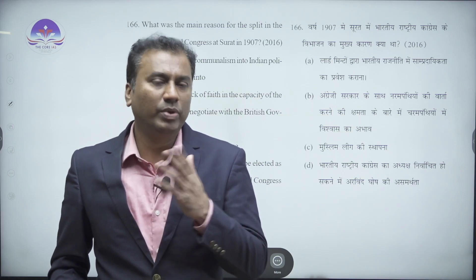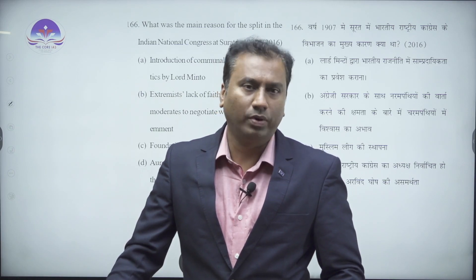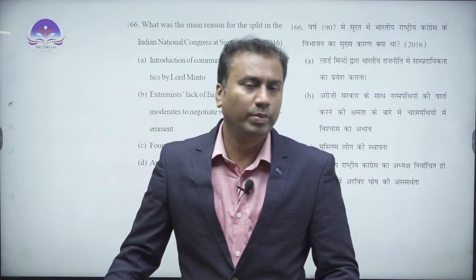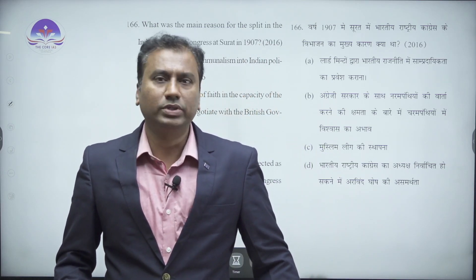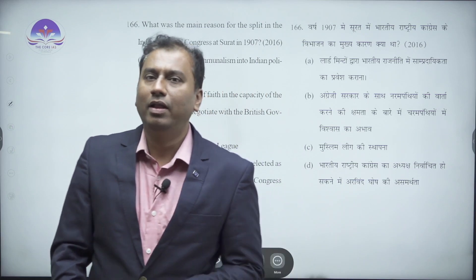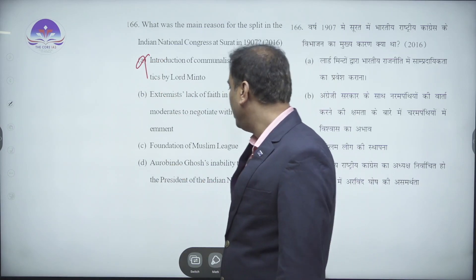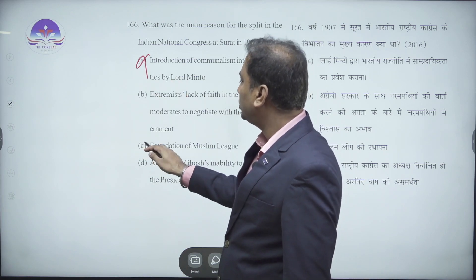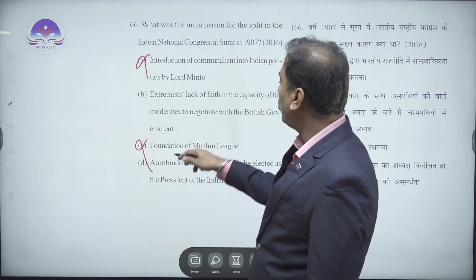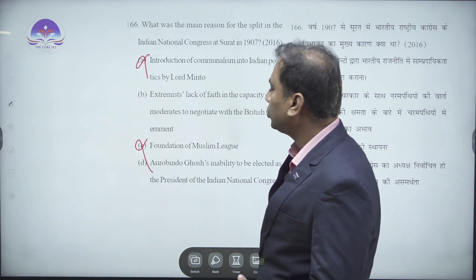While Option A is factually correct, the formation of the Muslim League did not cause Congress to split into two factions. Both moderates and extremists - in fact, the Congress as a whole - did not want religion to divide Indians. They were united on this issue. So Option A leading to Option C (foundation of Muslim League) - both are wrong for this reason.